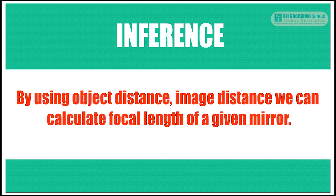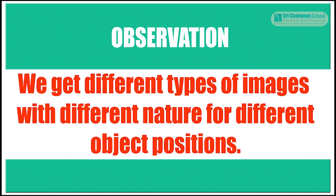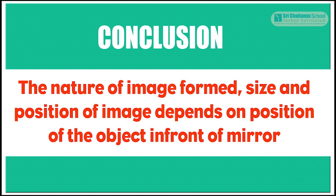Inference: By using object distance and image distance, we can calculate the focal length of a given mirror. Observation: We get different types of images with different natures for different object positions. Conclusion: The nature, size, and position of the image formed is dependent on the position of the object in front of the mirror.